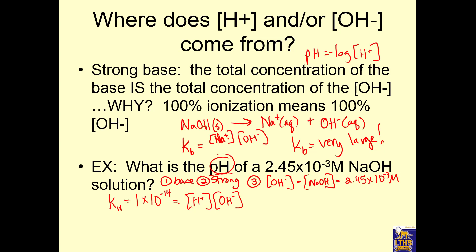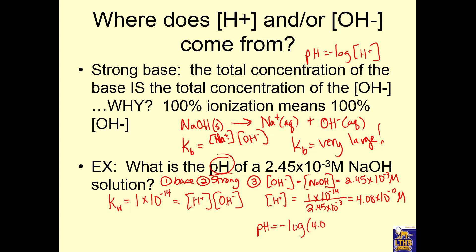We know the hydroxide concentration, and we want the hydrogen ion concentration. So H⁺ equals KW divided by OH⁻: 1 times 10 to the negative 14 over 2.45 times 10 to the negative 4. We find that the hydrogen ion concentration is 4.08 times 10 to the negative 11. Then pH equals negative log of 4.08 times 10 to the negative 11, and the pH of the solution is 11.39 — a strong base, close to 14.